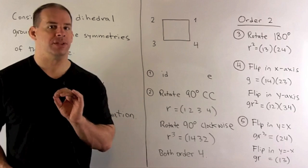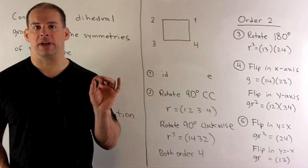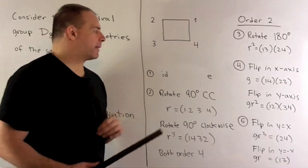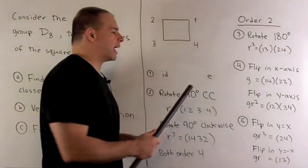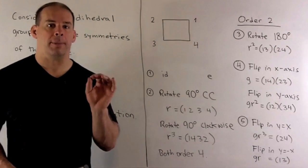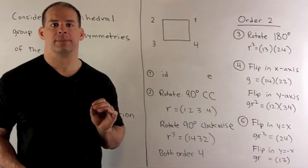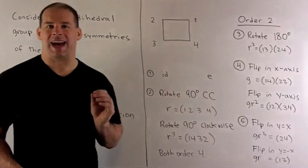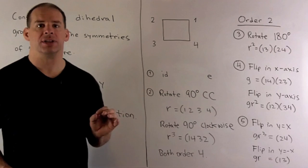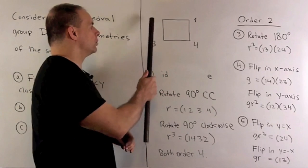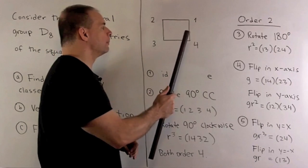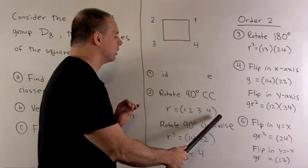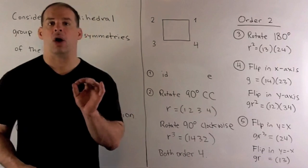Let's list our elements. My first element is to do nothing — it's the symmetry that just lets the square stay where it is. That's going to be my identity element, so that has order one. Now we can consider the rotations first. We'll call R the element that rotates our square 90 degrees counterclockwise. So one goes to two, two goes to three, three goes to four, four goes to one. In permutation notation, you can write that as this cycle here. Now R has order four.